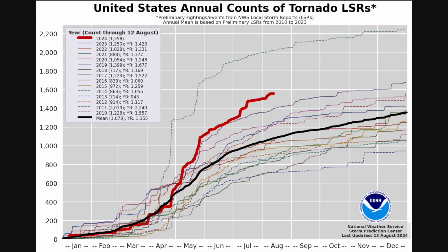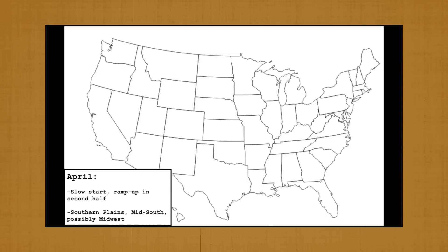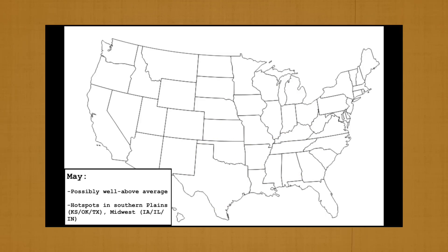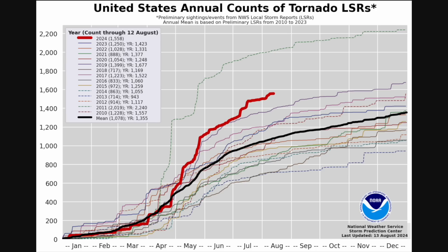In this video, we're going to analyze how the main factors that modulate US tornado frequency and distribution during the spring progressed throughout the season and what impact this had on tornadic activity in the US during the March through June timeframe. We'll then go month by month through our 2024 tornado season forecast and compare our predictions to what actually happened to see how well our forecast did this season. So without further ado, let's go ahead and get started.